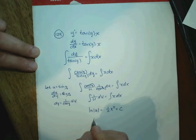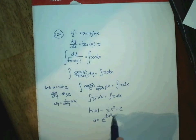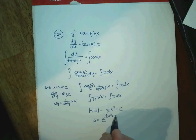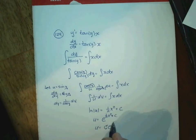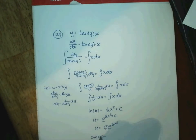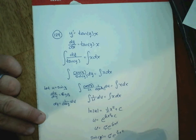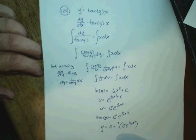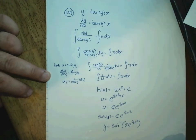To solve for u explicitly, we exponentiate both sides. As before, the constant c in the power becomes a coefficient: e^(½x² + c) = e^c · e^(½x²), and e^c is just an arbitrary constant C. So u = C·e^(½x²). Remembering that u = sin(y), we have sin(y) = C·e^(½x²). Taking the inverse sine of both sides gives y = arcsin(C·e^(½x²)).